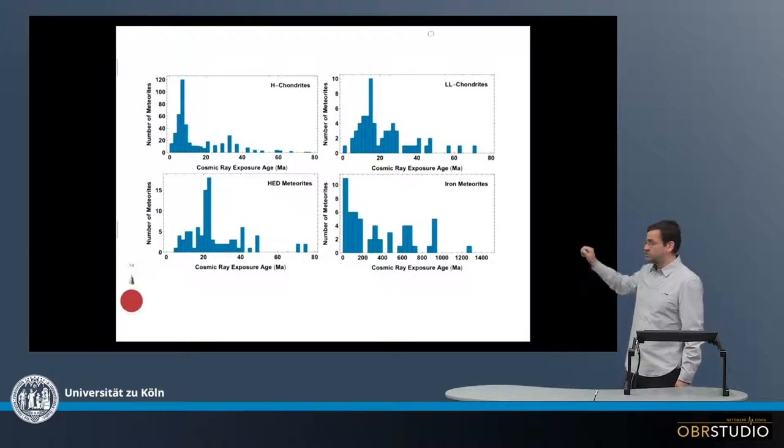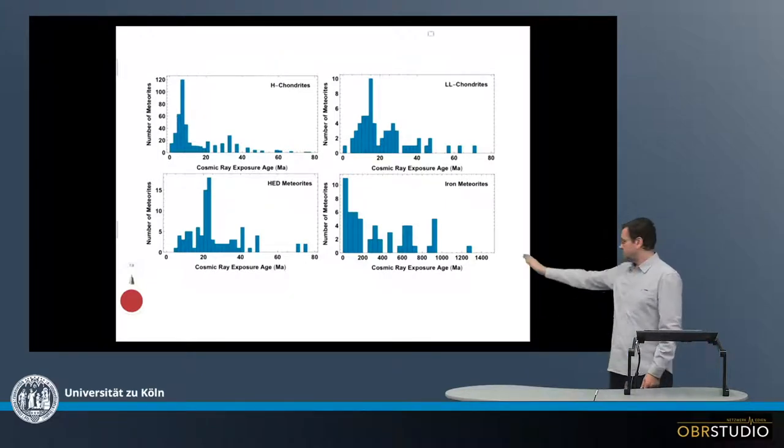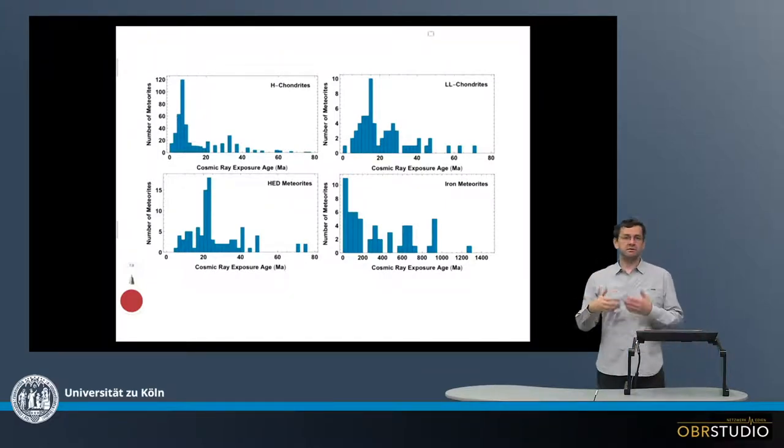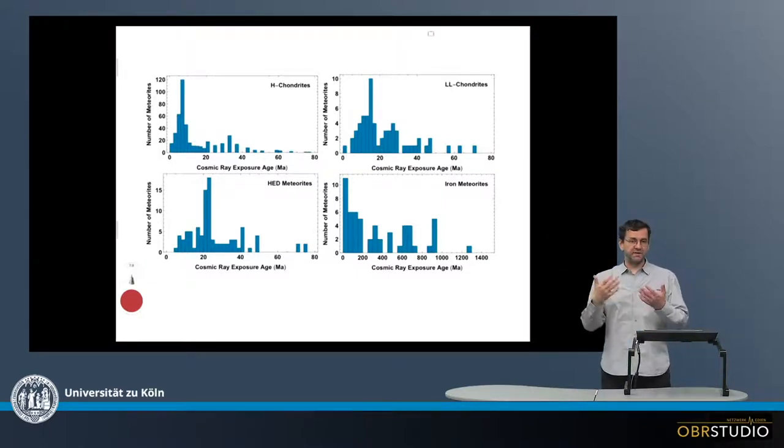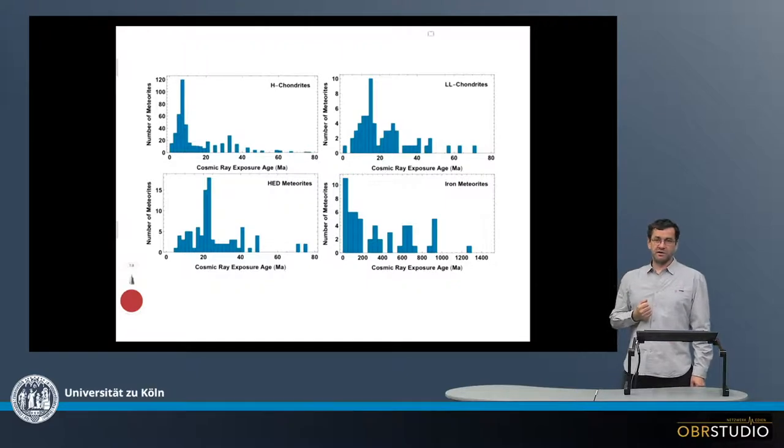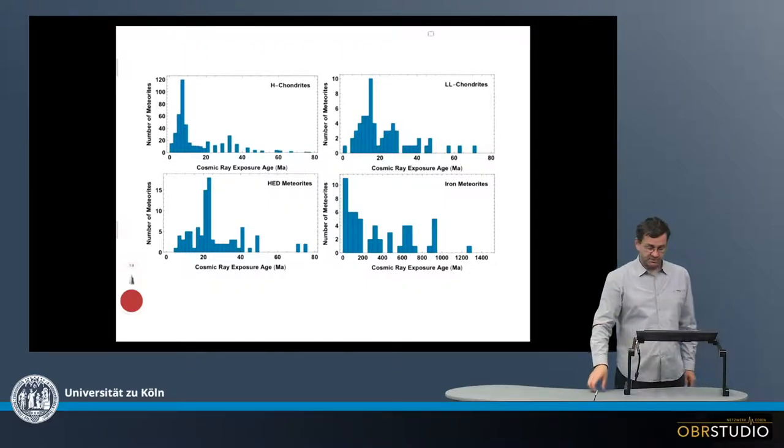And this is what is shown on these plots here. On the x-axis are the cosmic ray exposure ages, and on the y-axis the number of meteoroids with the same cosmic ray exposure age. So these are histograms here.